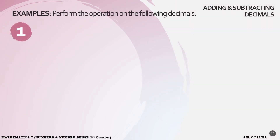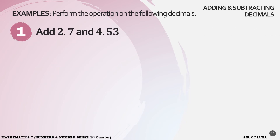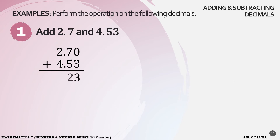Let us have examples in adding and subtracting decimals. Number 1: add 2.7 and 4.53. Align the decimals according to their place values. We have 2.70 plus 4.53. We can add 0 to make our decimals even. 0 plus 3 is 3; 7 plus 5 is 12 — write down 2, carry 1; 1 plus 2 plus 4 is 7. Affix the decimal point. Our answer is 7.23.